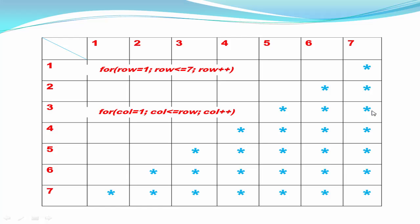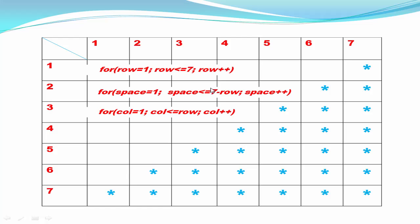The question is: how do we calculate the number of spaces? The logic is: maximum number of rows minus current row. Here the maximum number of rows is 7. For the first row: 7 minus 1 equals 6 spaces. For the second row: 7 minus 2 equals 5 spaces. For the third row: 7 minus 3 equals 4 spaces, and so on. We can write the loop as: for space equal to 1, space less than or equal to 7 minus row, then space plus plus. Here row indicates the current row.